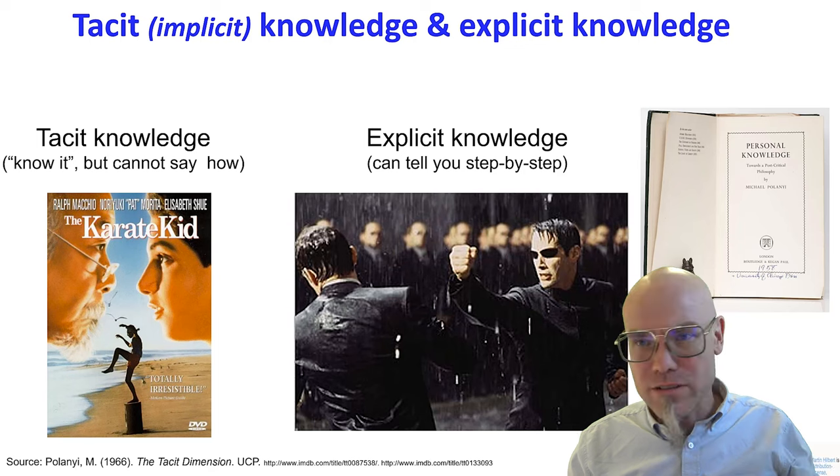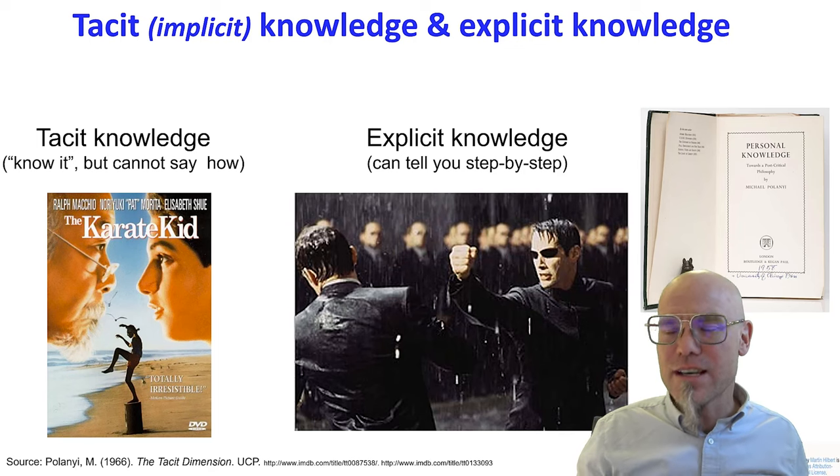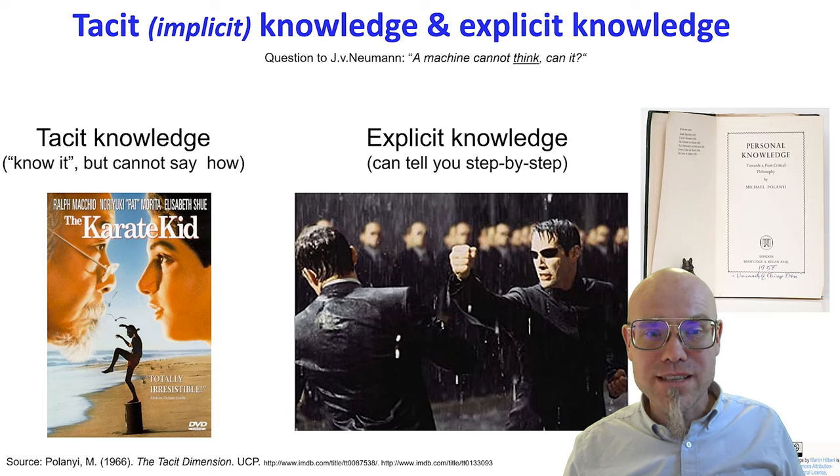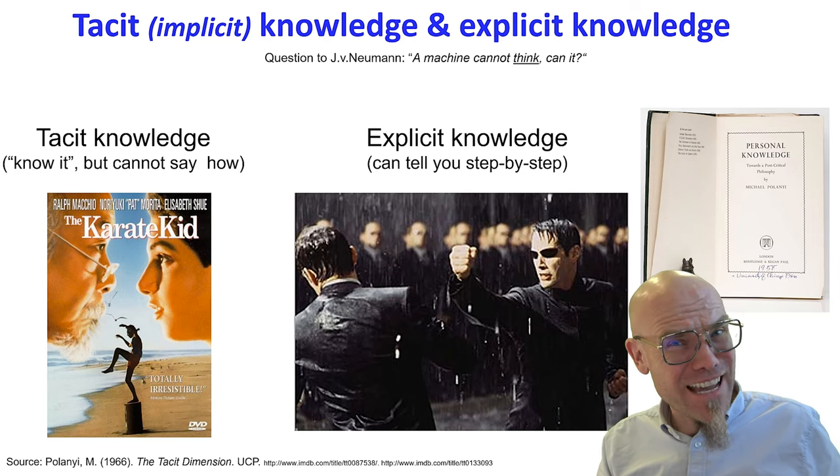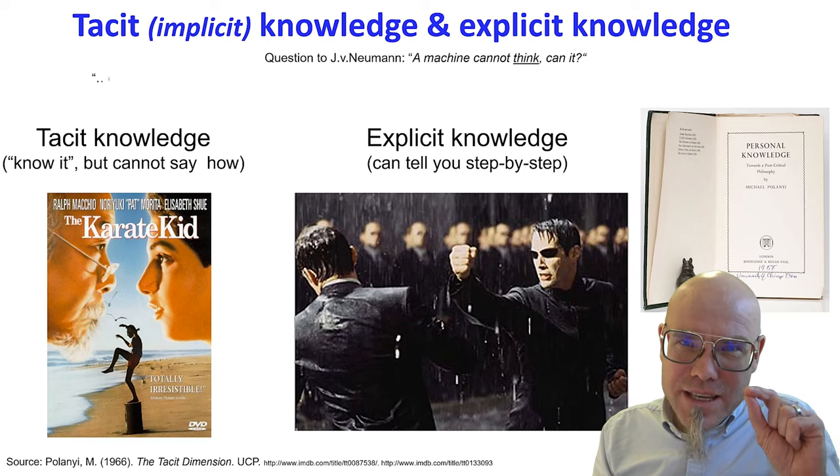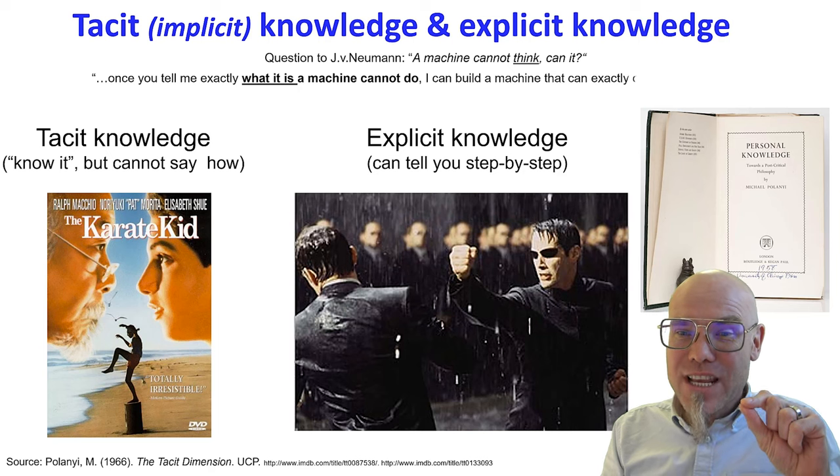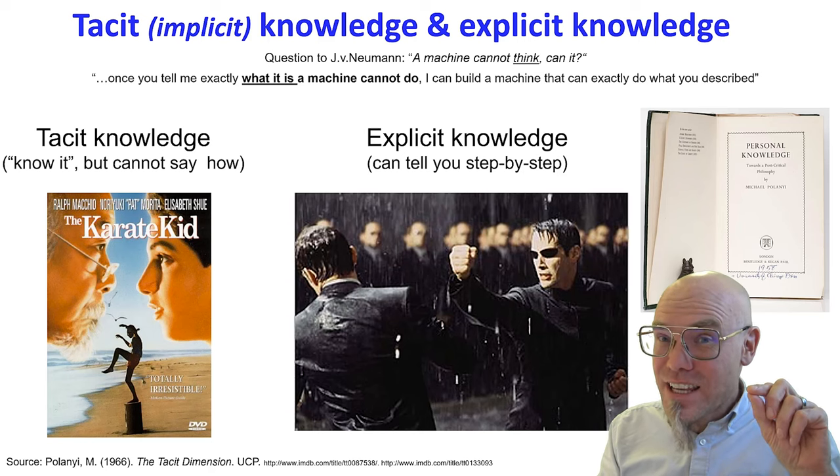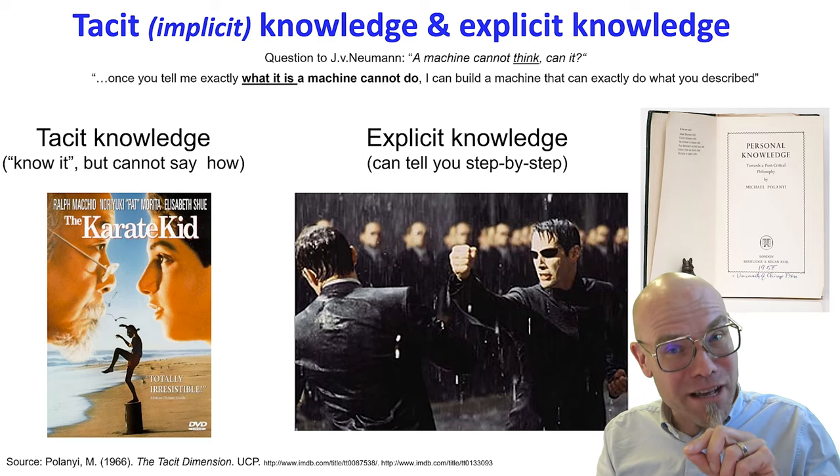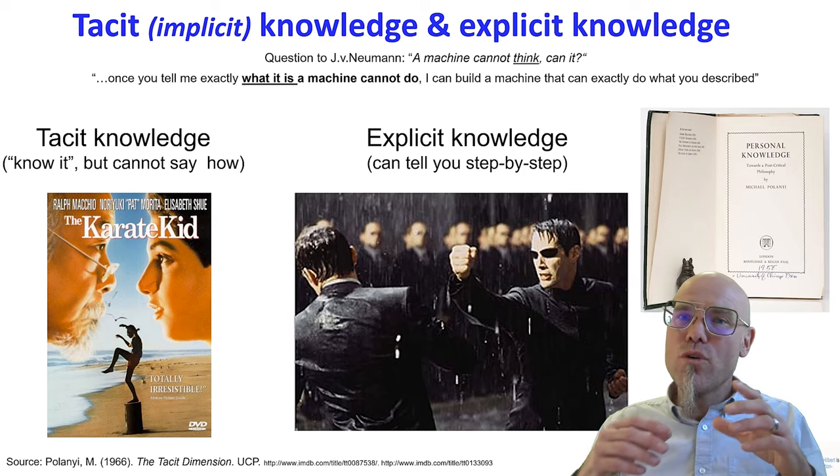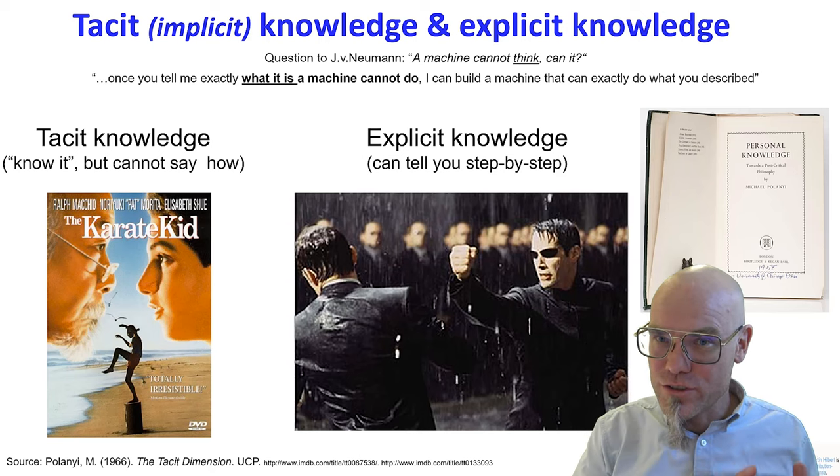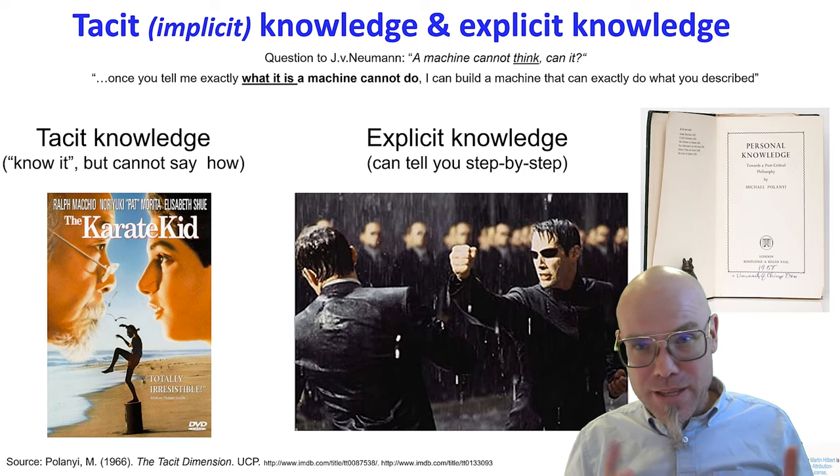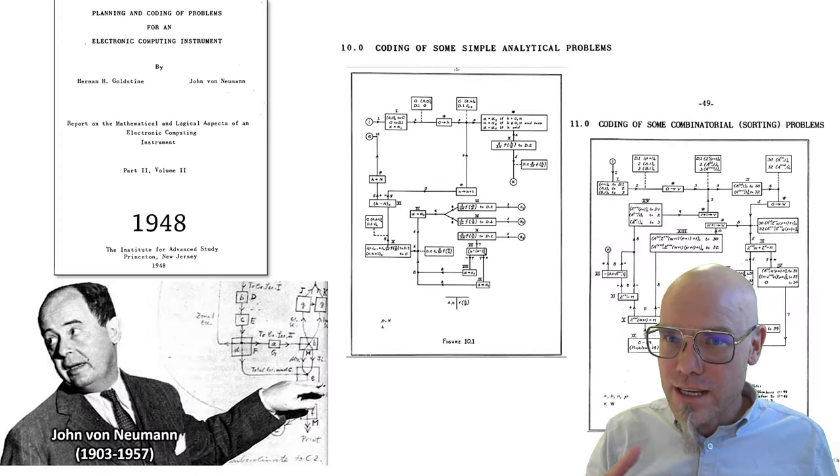This distinction goes all the way back to the founding years of our field. Once at a conference, they asked Professor John von Neumann, one of the founders of modern computer science, a machine cannot think, or can it? Professor Neumann responded, once you tell me exactly what it is a machine cannot do, I can build a machine that can exactly do what you described step-by-step. So when you tell me what thinking is, then I can build a machine that can do exactly that, because once you described it, I can code it up. Then it became explicit. While not all algorithms are necessarily explicit, they are also tacit, once we want to study them and understand what we're doing, it's useful to make them explicit.